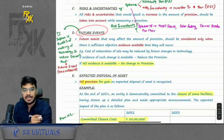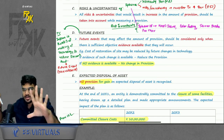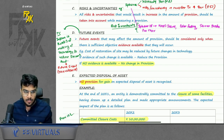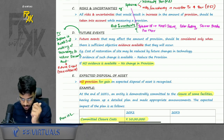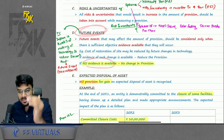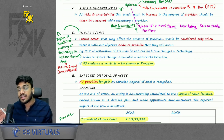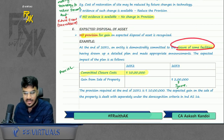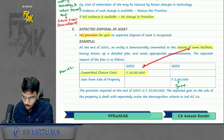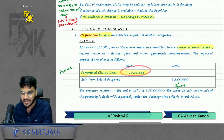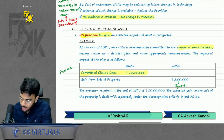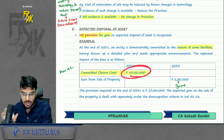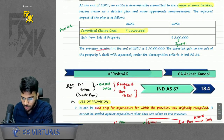Fourth, future events: consider future events only if there is evidence. For example, if Japan is developing technology to reduce decommissioning costs but there is no evidence yet, do not reduce the provision. Fifth, expected disposal of asset: when closing a facility, book a provision for closure costs. Any gain on sale of property when closing is ignored until realized — provision is booked gross. Also, review provision at every year end; if the obligation crystallizes and exact amount is known, reclassify as a liability. When provision is at present value, perform unwinding of interest.